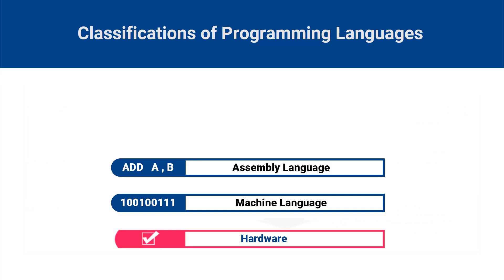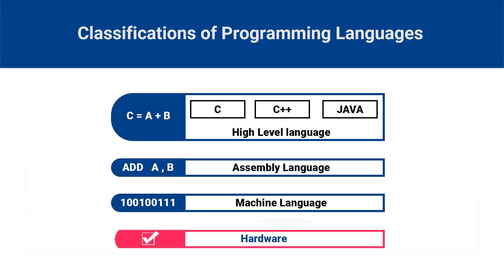Assembly language is not as user-friendly as a high-level language, but it is faster and more efficient than a high-level language. The third level of programming language is high-level language, which is designed to be easy for humans to use. Some examples of high-level programming languages are C, C++, Java, Python and JavaScript.